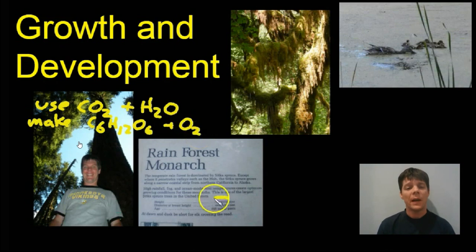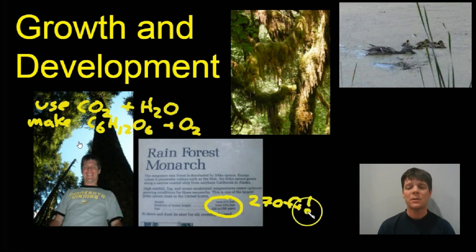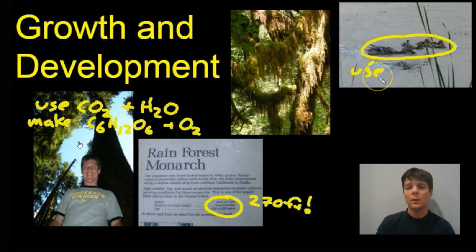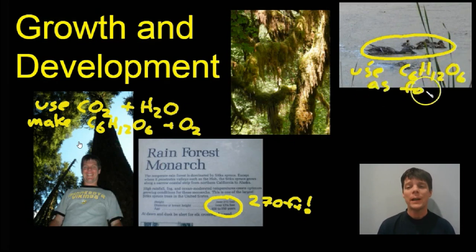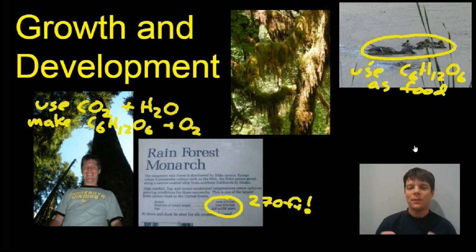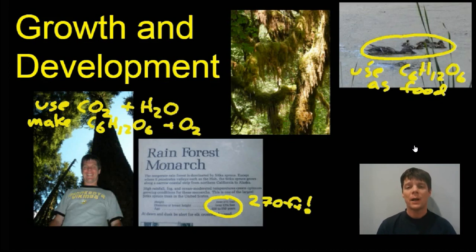The glucose formula is C6H12O6, and producers also make oxygen. This tree started out as a really small tree about 500 to 550 years ago, but it's grown to be incredibly huge at a height of over 270 feet. Producer organisms also include the algae in the pond where the ducks are swimming. The ducks, as consumer organisms, eat the algae and use those carbohydrate molecules — C6H12O6 — to provide power for their body and to grow and develop.